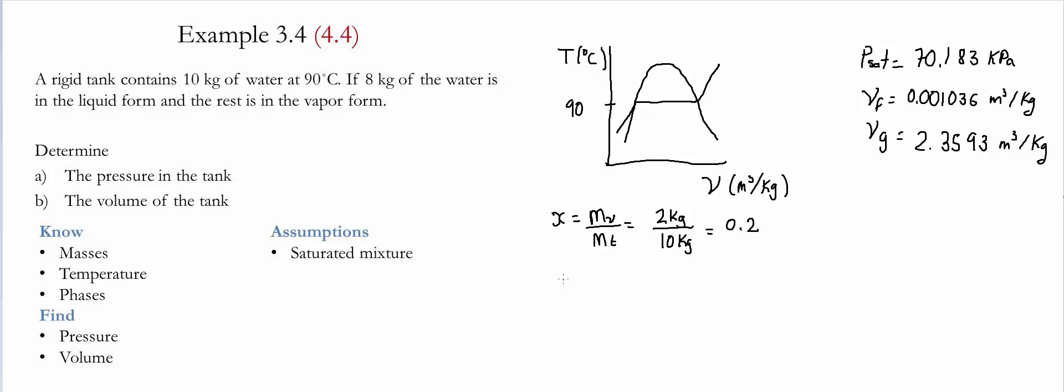In order to find the specific volume we're going to use this formula: 1 minus x times the specific volume for the saturated liquid, plus quality times the specific volume for the gas. Once we substitute all these values and the quality, we find that the specific volume for this particular case is equal to 0.4727 meter cubed per kilogram.